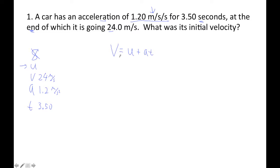That's how to do it in one step. Sometimes you can do it in one step, sometimes it takes two steps. So the final velocity is 24. Initial is what we're trying to find, so you leave that as a variable plus 1.2 times 3.5.